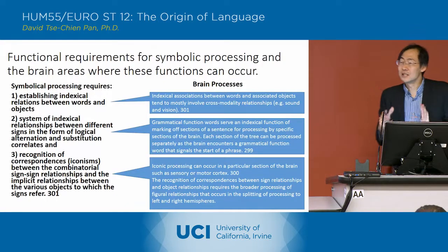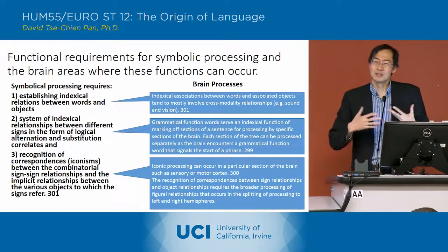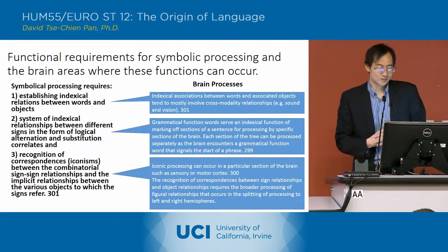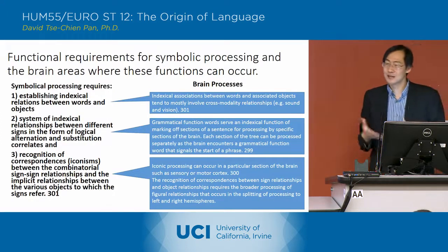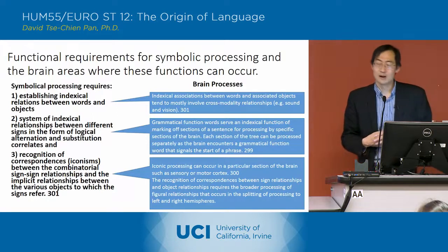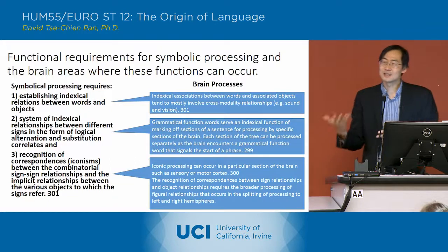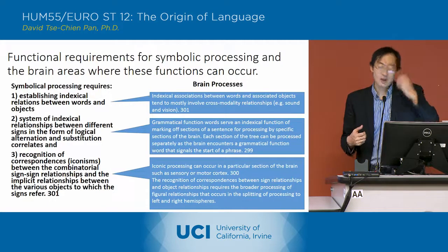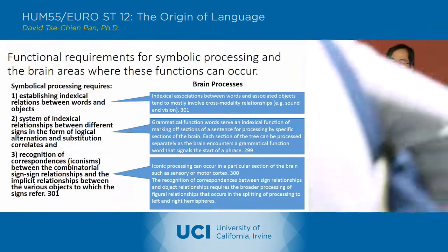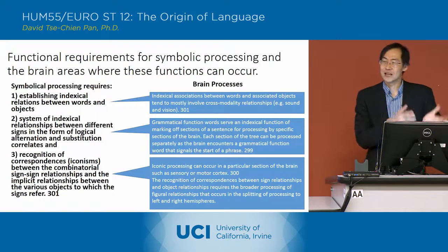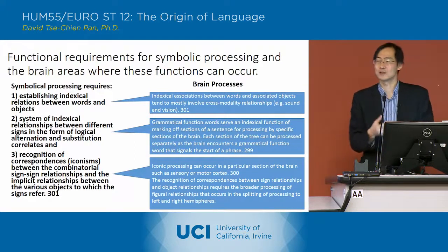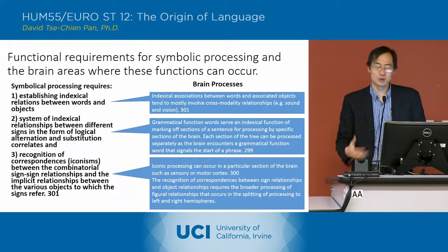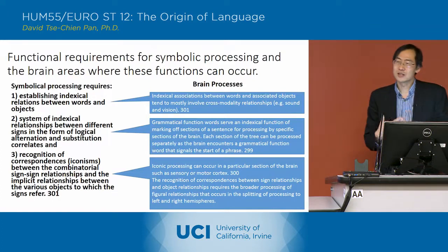Overall, Deacon links the needs of symbolic processing with different parts of the brain. Symbolic processing requires, for instance, establishing an indexical connection between words and objects — that is one of the bases of what the brain needs to do. He indicates that these indexical associations between words and associated objects tend mostly to be constructed through what he calls cross-modality relationships: matching up a sound to something you see, matching up something you see to something you touch. Those types of relationships in the brain — where parts that process sound and vision link together — tend to be the ones that process indexical relationships.